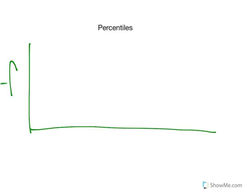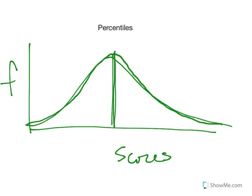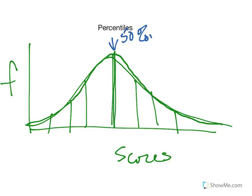These percentiles, a lot of times, are based on normal distributions, which we were just talking about. The mean, median, and mode are all here in the center. This should be bell-shaped and symmetrical. The mean, median, and mode are all in the same place. The 50th percentile is always right in the middle.